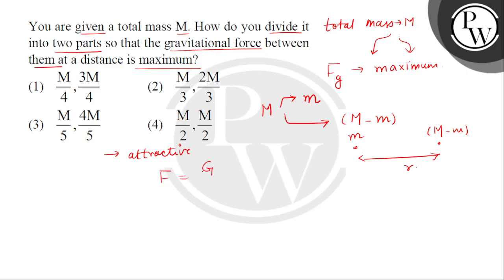Capital G, which is universal gravitation constant, times the product of masses means small m multiplied by capital M minus small m divided by square of the distance between them. So, this is the value of force.